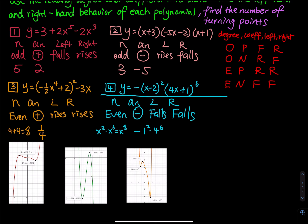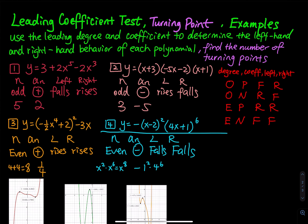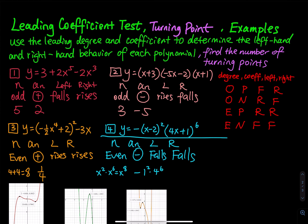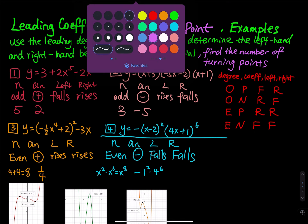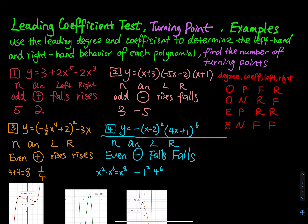Before we go — turning points. For the first function, the highest degree is 5, so we have at most 5 minus 1, which equals 4 turning points. For number 2, the highest degree is 3, so at most 3 minus 1, which equals 2 turning points.